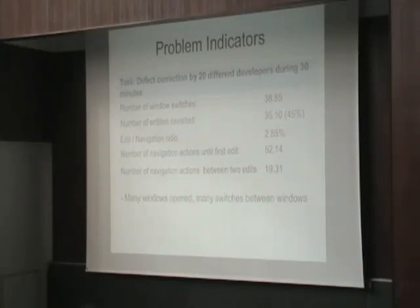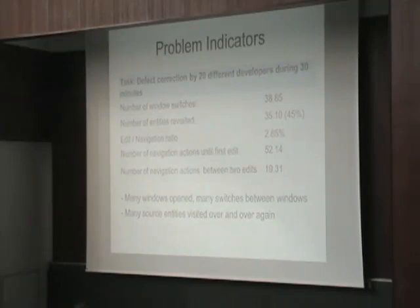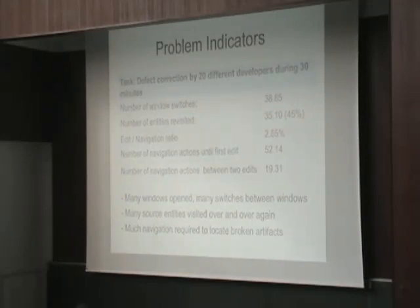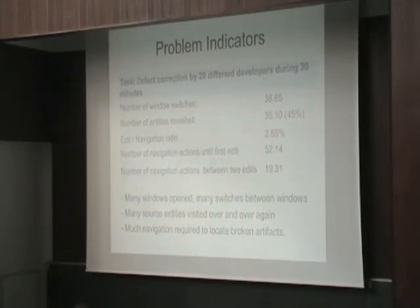Here is a list of problems: we have many windows open, and we have many switches between those windows. We also have many source entities that are visited several times. Additionally, we really have to do a lot of communication in any platform-based software system to find defects and to find opportunities to refactor the code. Communication is the most important thing we have to do when we develop software.